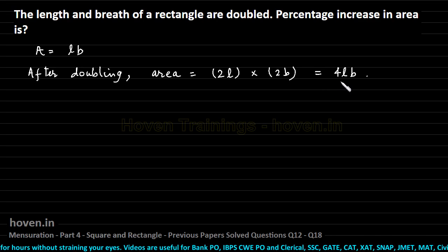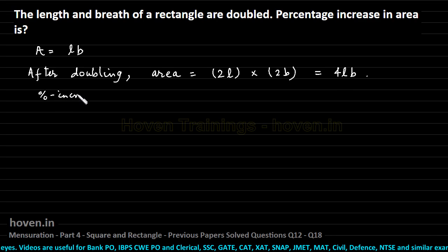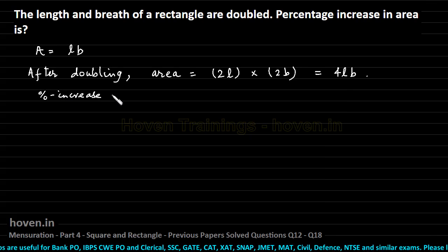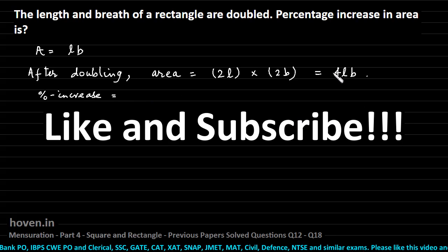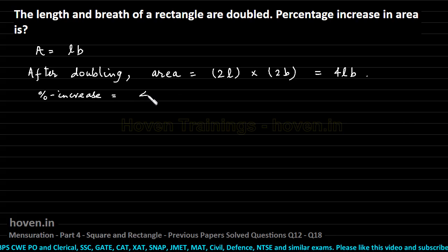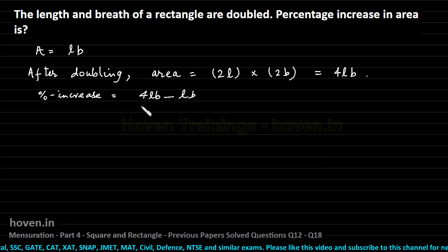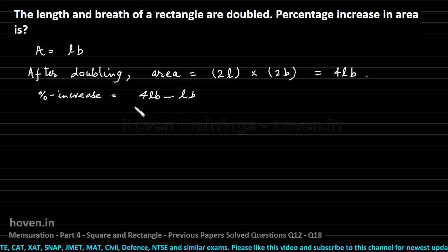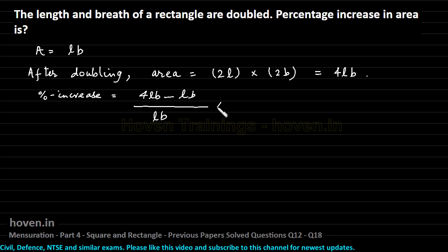The new area is 4LB. Therefore we can write percent increase is equal to, first of all what is the increase? It is 4LB minus LB. This is the increase. Divide it by the original value which is LB and multiply the entire thing by 100. This will give us the percentage increase.